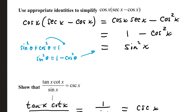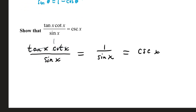Show that tan(x)·cot(x) / sin(x) = csc(x). Since tangent and cotangent are reciprocals, their product is 1, and 1/sin(x) is csc(x). When verifying an identity, take the harder side of the equation and through identities and algebra manipulation, make it look like the easier side.